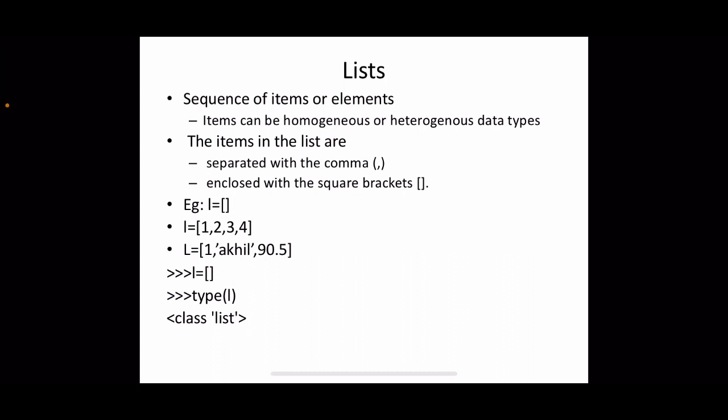The first feature is that a list is a sequence of items or elements. The items in this sequence can be homogeneous or heterogeneous data types — that is the main specialty. The individual elements in a list can be all of the same type (homogeneous), or one element can be integer, the second a string, the third a floating point — all items can be of different types.